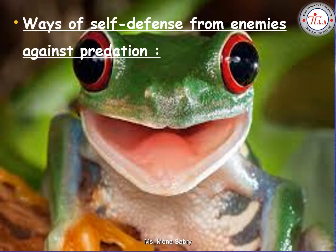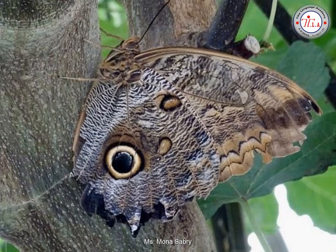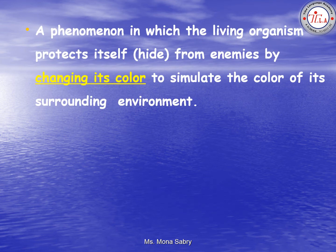Ways of self-defense against predation: camouflage and mimicry. Camouflage is a phenomenon in which the living organism protects itself from enemies by changing its color to simulate the color of its surrounding environment, so they change their color to hide from enemies.